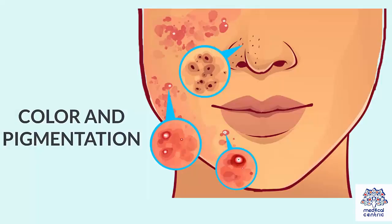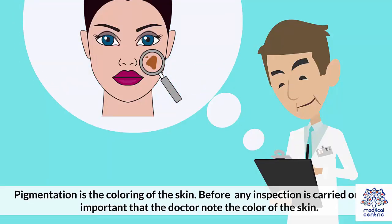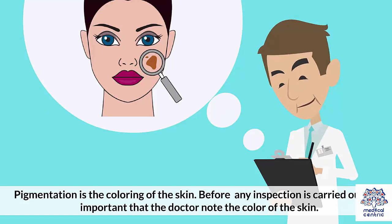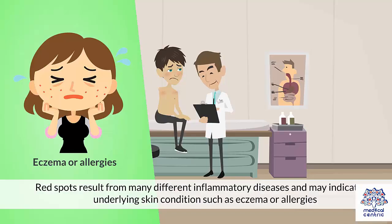Color and Pigmentation: Pigmentation is the coloring of the skin. Before any inspection is carried out, it is important that the doctor note the color of the skin. Red spots result from many different inflammatory diseases and may indicate an underlying skin condition, such as eczema or allergies.